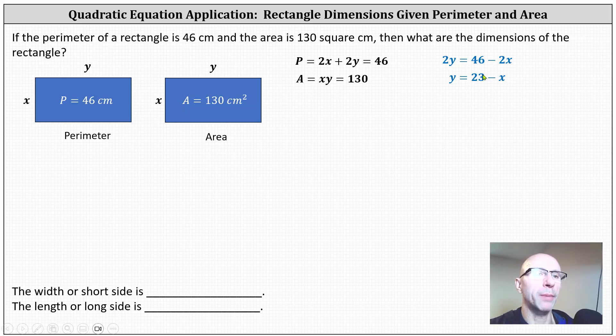And since y is equal to 23 minus x, we can now substitute 23 minus x for y in the second equation. This will give us an equation that only contains x. Performing the substitution, we have x times the quantity 23 minus x equals 130.